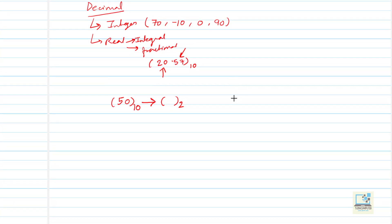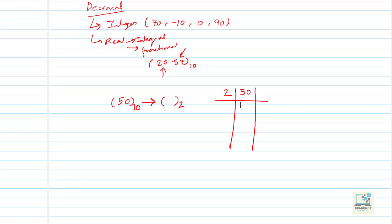To convert 50 into binary you have to divide by 2. We write the remainder on the right side and the quotient at the bottom. So 2 times 25 is 50 — 25 is the quotient, remainder 0, written on the right side.